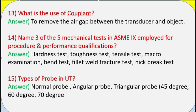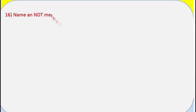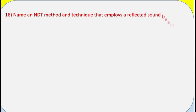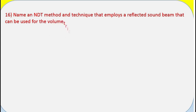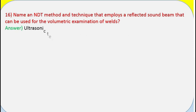Question 15: Types of probes in UT? Answer: Normal probe, angular probe, triangular probe — 45 degree, 60 degree, 70 degree. Question 16: Name an NDT method and technique that employs a reflected sound beam that can be used for the volumetric examination of welds. Answer: Ultrasonic testing.